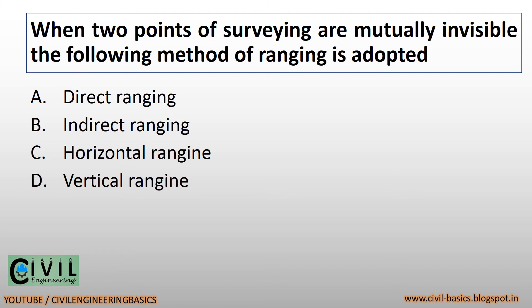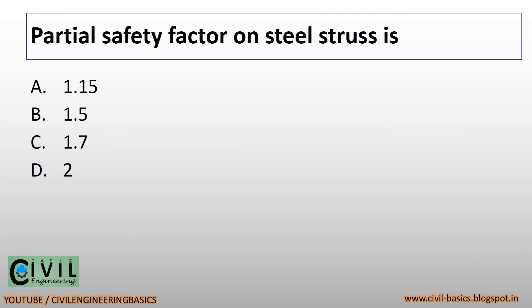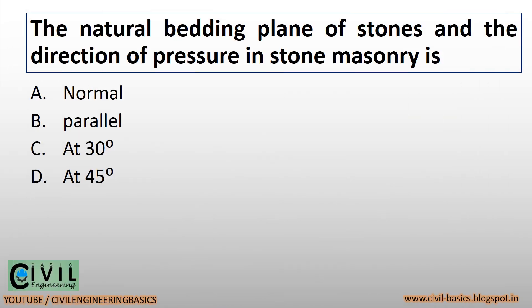When two points of surveying are mutually invisible, the following method of ranging is adopted: indirect or reciprocal ranging (DA). Partial safety factor on steel structures is 1.15. The natural bedding plane of stones and the direction of pressure in stone masonry is normal.